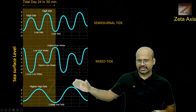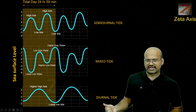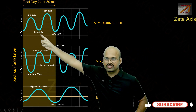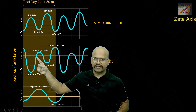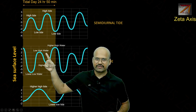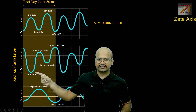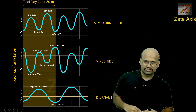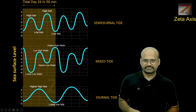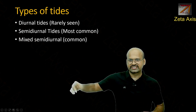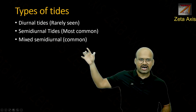Here are all three tide types together for comparison. In semi-diurnal tides, the height of the two high tides is approximately the same with little gap. In mixed semi-diurnal tides, there is a big gap between the two high tides, and similarly a large gap between the two low tides. Diurnal tides are rarely seen, semi-diurnal tides are the most common, and mixed semi-diurnal tides are also common.